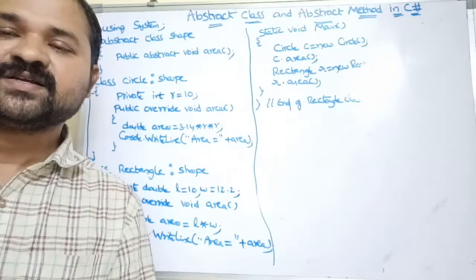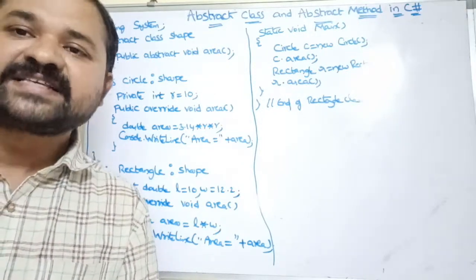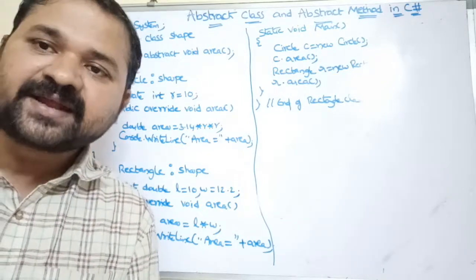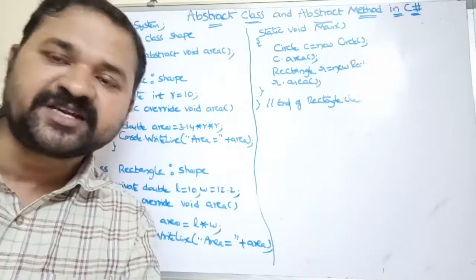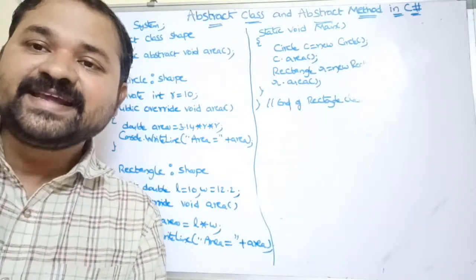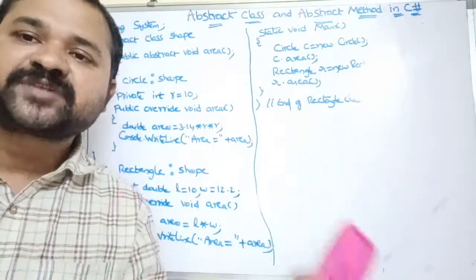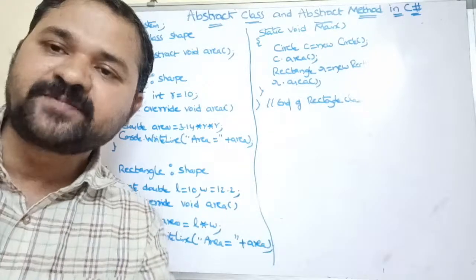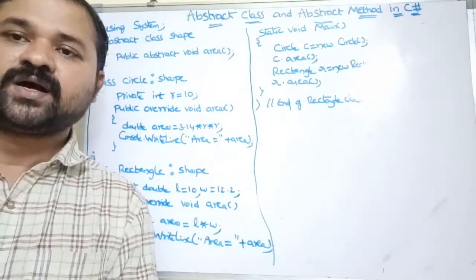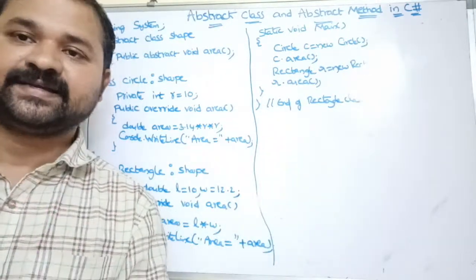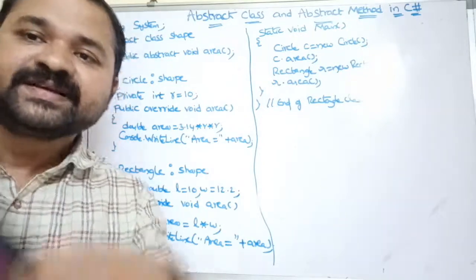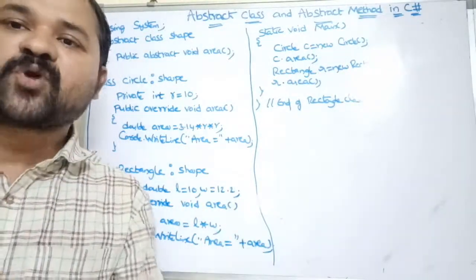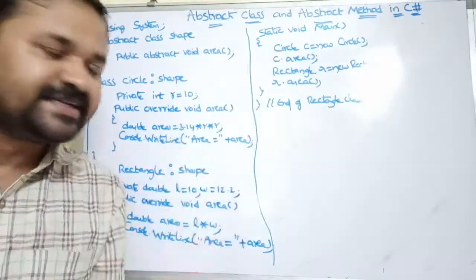Now let's see what is an abstract class. If a class contains at least one abstract method, then it is known as an abstract class. An abstract class contains abstract methods as well as non-abstract methods. It is not possible to create an object for an abstract class, because it contains abstract methods which don't have any definition. The derived classes which are inheriting from the abstract class need to provide the definition for the abstract method.